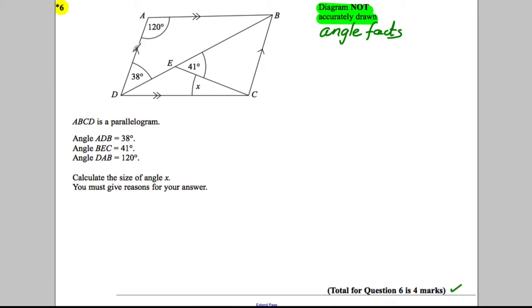Now this is a parallelogram. This means this line and this line are parallel, and this line and this line are parallel. We're told that angle ADB is 38 degrees, this one's 38. A to D to B. B to E to C, so B to E to C is 41. And D to A to B, so D to A to B is 120.